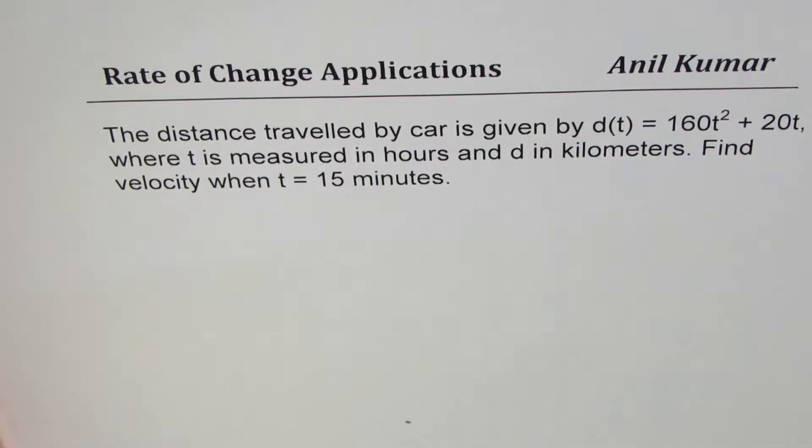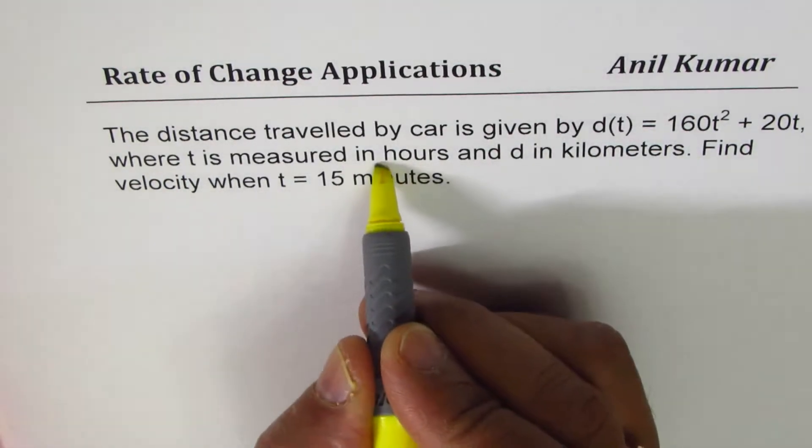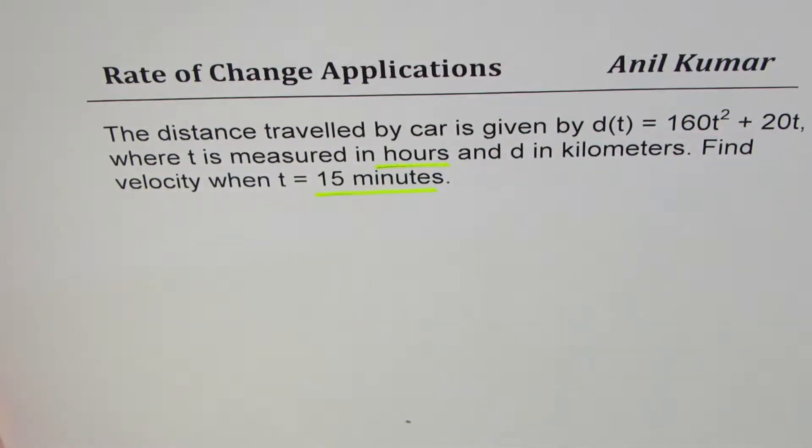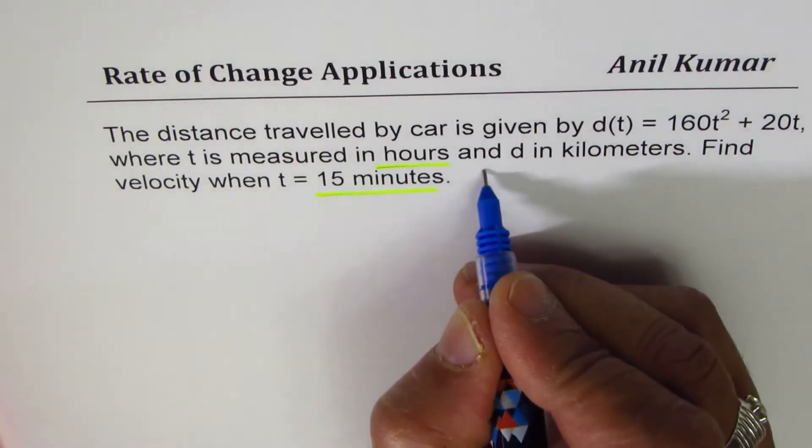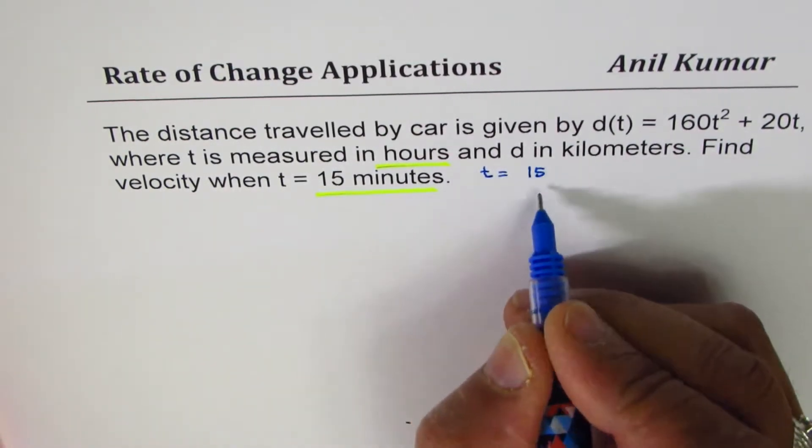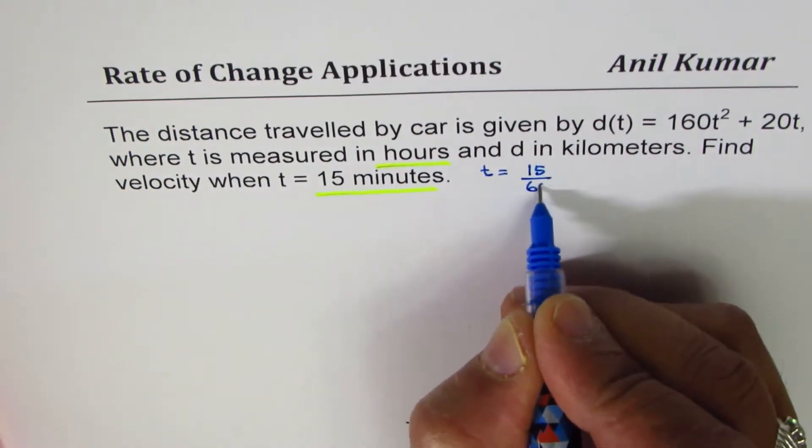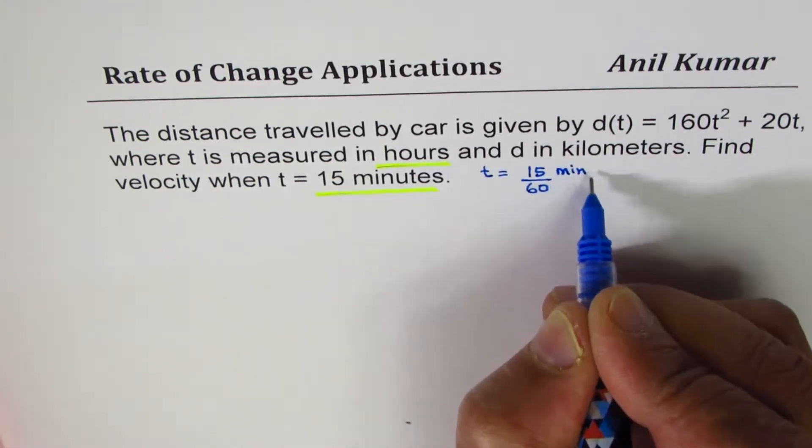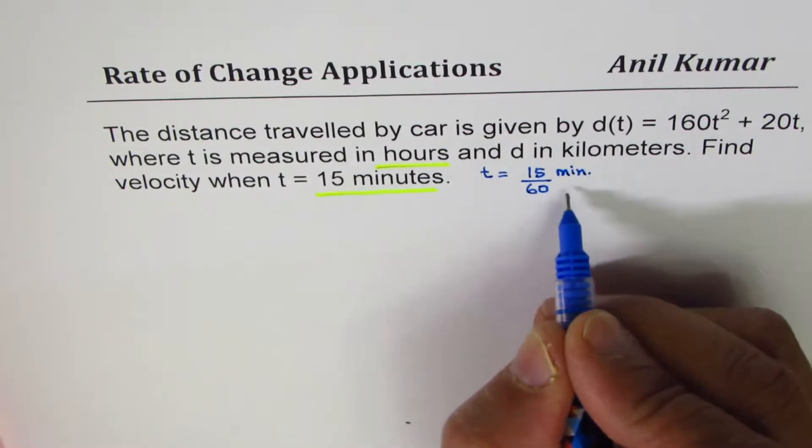You can see that there is a change in units. We're talking about time in hours here, we have given it in minutes. So as soon as you see that, first thing is you should think about time in terms of hours which would be 15 over 60 hours, which is one-fourth of an hour.